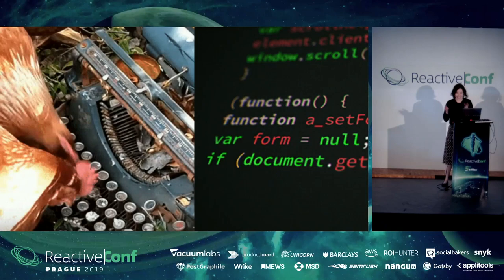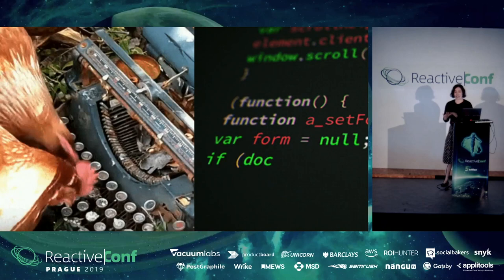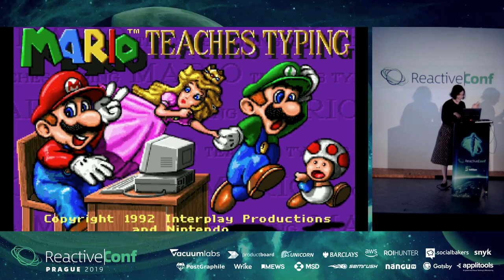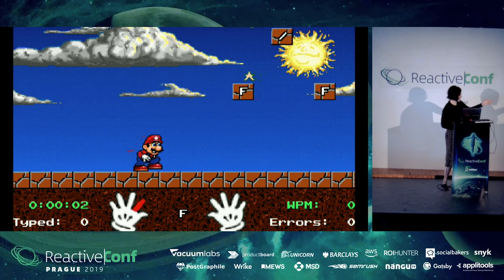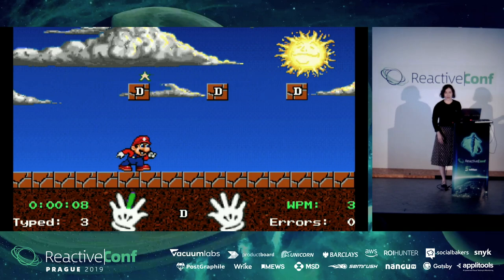I wanted to get better at this, and I thought maybe a game would make it more interesting for me. The way I actually learned how to touch type was this lovely game, Mario Teaches Typing. It came out in 1992. All the kids at my school were completely obsessed with it because it looks like a game, even though it's really just a typing test dressed up as a game.